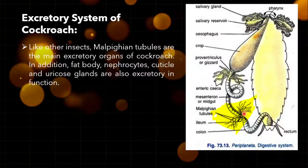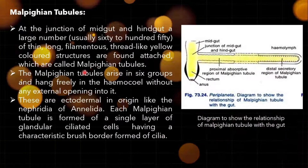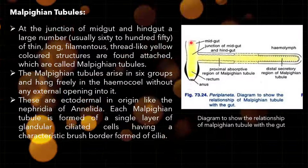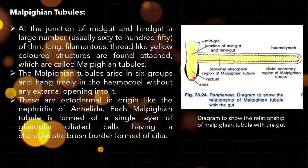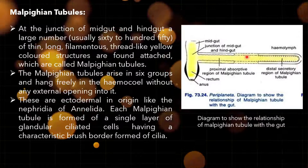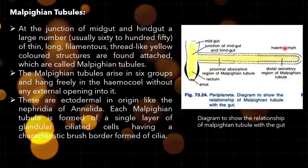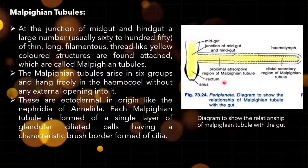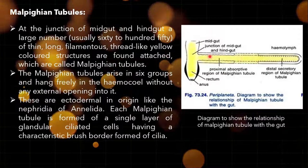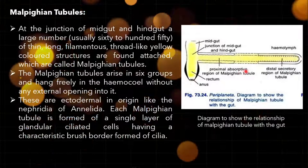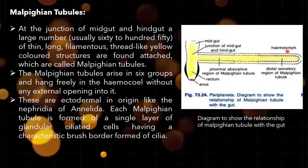Looking at the alimentary tract of cockroach: this is the junction of midgut and hindgut, this is the anus, and this is the Malpighian tubule. The tubule is surrounded by hemolymph. This is the proximal absorptive region of the Malpighian tubule, and this is the distal secretory region where secretion takes place.